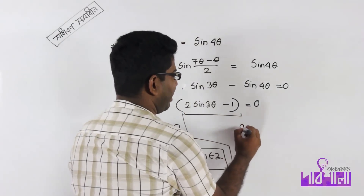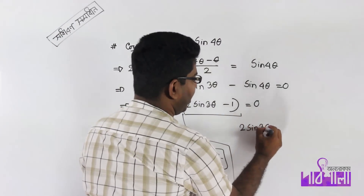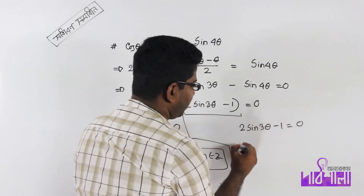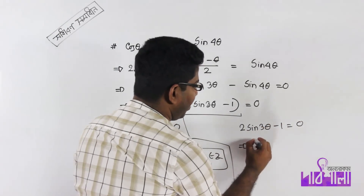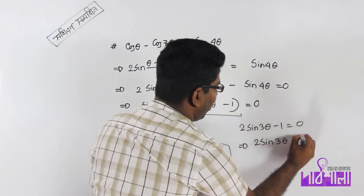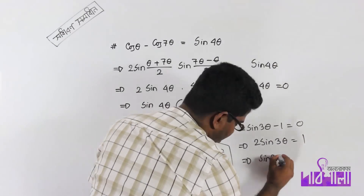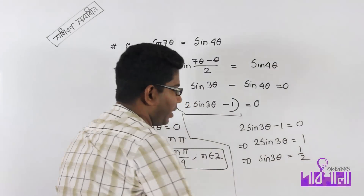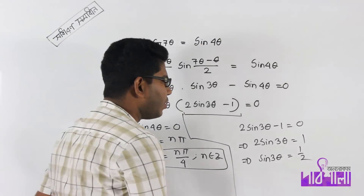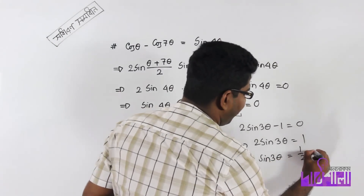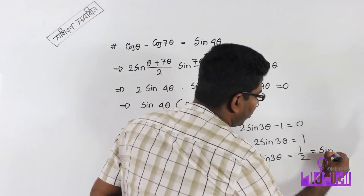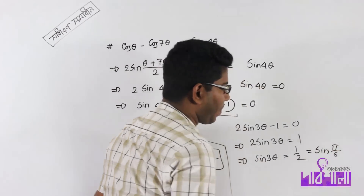Now solving the second part: 2 sin 3θ minus 1 equal to 0. So 2 sin 3θ equal to 1, meaning sin 3θ equal to 1/2. And 1/2 means sin(π/6), since sin(π/6) = 1/2.